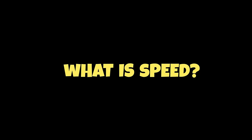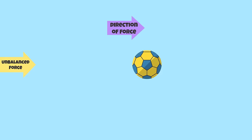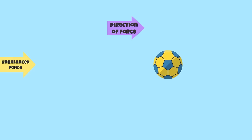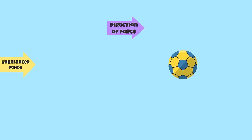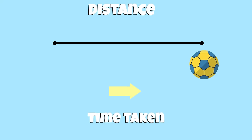So you might be wondering: what is speed and how is it calculated? When an unbalanced force is applied to an object at rest, the object will start moving in the direction of the stronger force. To find the speed of the moving object, we need to divide the distance the object traveled by the time taken to travel that distance.